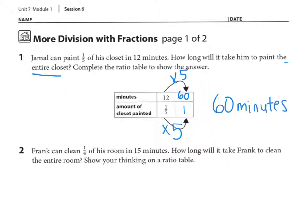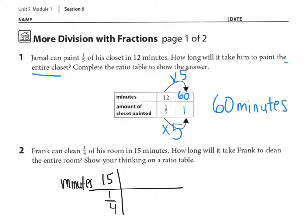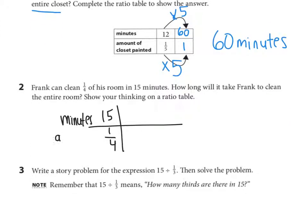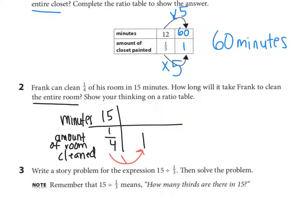Number 2 says: Frank can clean one-fourth of his room in 15 minutes. How long will it take Frank to clean the entire room? Show your thinking on a ratio table. So I have 15 minutes for one-fourth of the room. I'm trying to solve how long it will take Frank to clean the entire room — that is one whole. To move from one-fourth to one whole, I'm multiplying by 4. Fifteen times 4 would be 60, so it's 60 minutes to clean the entire room.